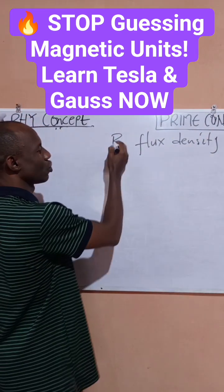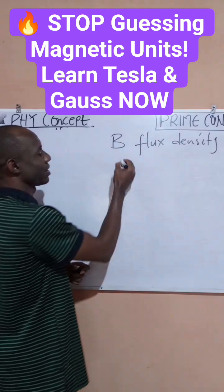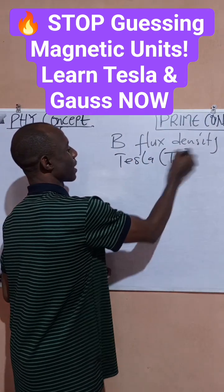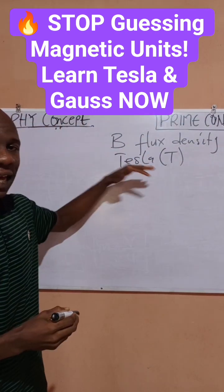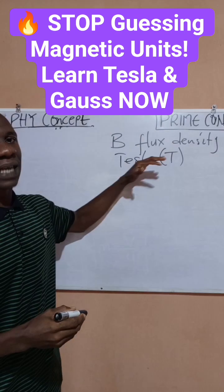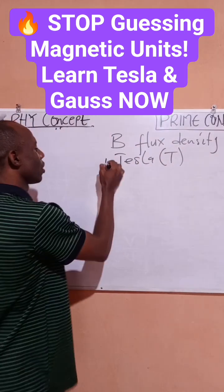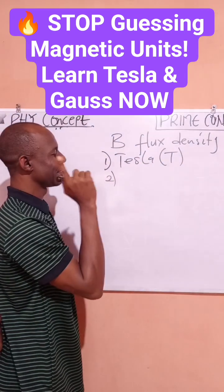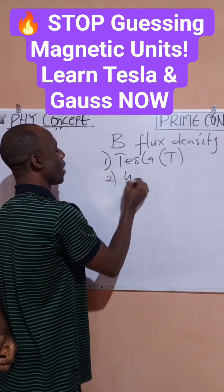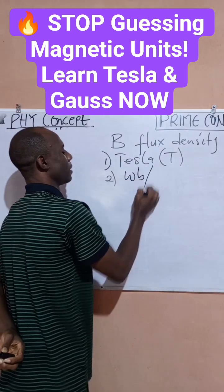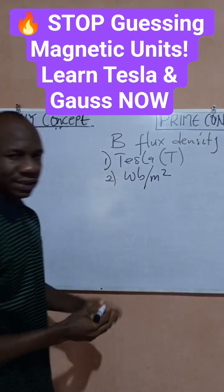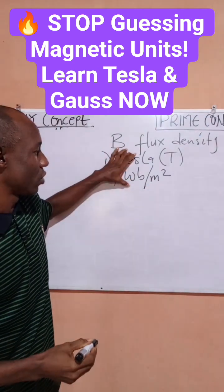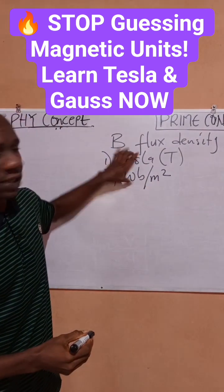Number one: you should know that magnetic flux density is measured in tesla, capital T. In fact, this is the SI unit of magnetic flux density. You should also know that magnetic flux density is measured in weber per meter squared. This is another unit and also an SI unit.